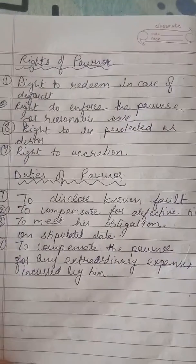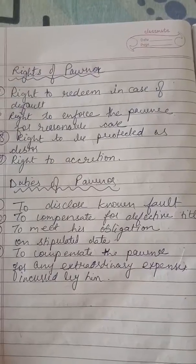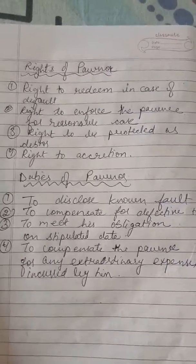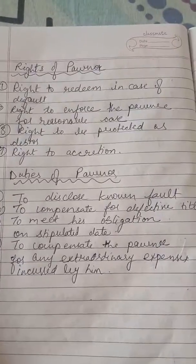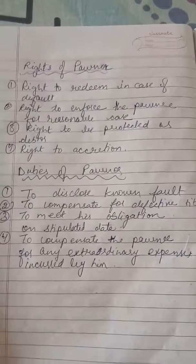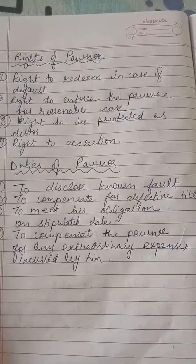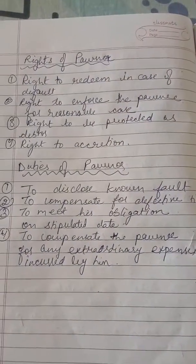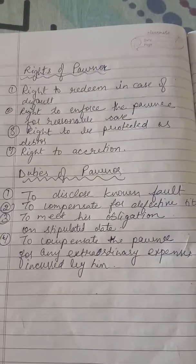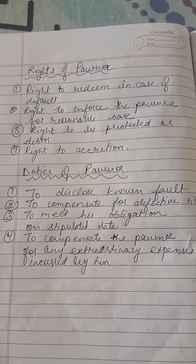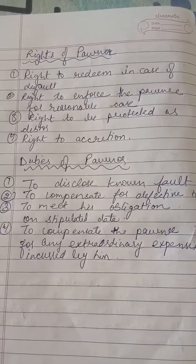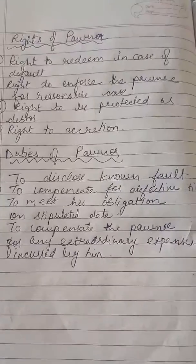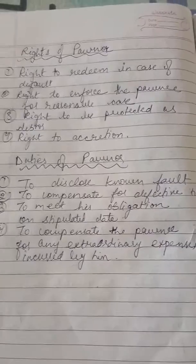Pawnor के rights में: first is the right to redeem in case of default - अगर कोई default arises तो pawnor के पास पूरा हक है कि वो अपने goods वापिस redeem कर सके. Next is the right to enforce reasonable care - pawnor पूरी तरह expect कर सकता है और ask कर सकता है reasonable care for the pledged goods. अगर pledgee proper care नहीं करता और pledgor को कोई loss होता है, तो pawnor को पूरा right है कि वो उन losses की भरपाई करवा सके. Next is the right to protect as the debtor - pawnor को debtor के सारे rights प्राप्त होते हैं.